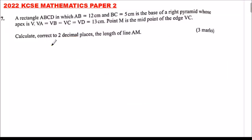2022 KCSE Mathematics Paper 2, Question Number 7. A rectangle ABCD in which AB equals 12 cm and BC equals 5 cm is the base of a right pyramid whose apex is V. VA equals VB equals VC equals VD equals 13 cm. Point M is the midpoint of the edge VC.